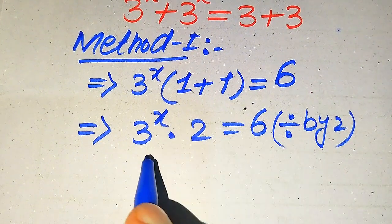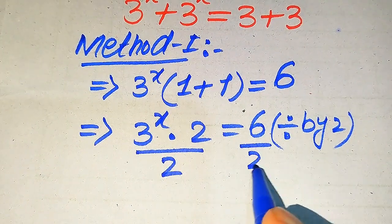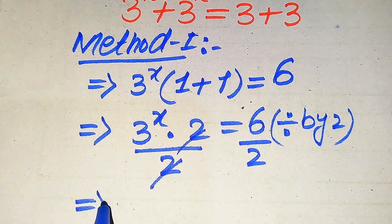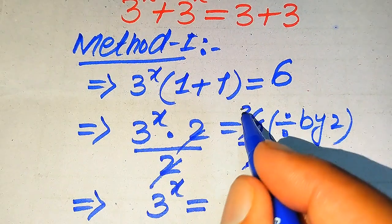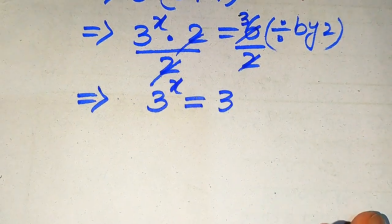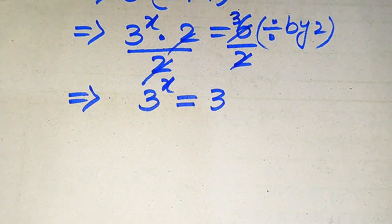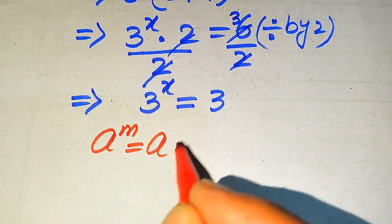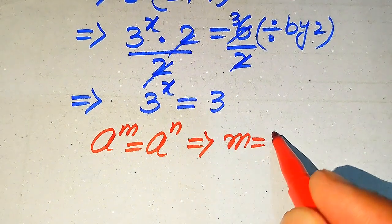When you divide both sides by 2, it is written as 3 to the power of x multiplied by 2 divided by 2 equals 6 divided by 2. This 2 cancels out and we get 3 to the power of x equals 3. Further in the next step we use the exponential law: if a to the power of m equals a to the power of n, this implies that m equals n.